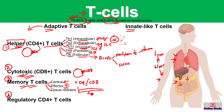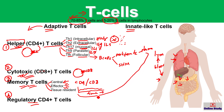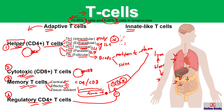Regulatory T cells are a special category. When a virus or bacteria is cleared from our body, the other T cells need to be calmed down. This type of CD4 T cell helps to calm down or regulate the other types of T cells — that is why they are called regulatory T cells. They are mainly CD4-type, meaning they express the CD4 protein on their surface.